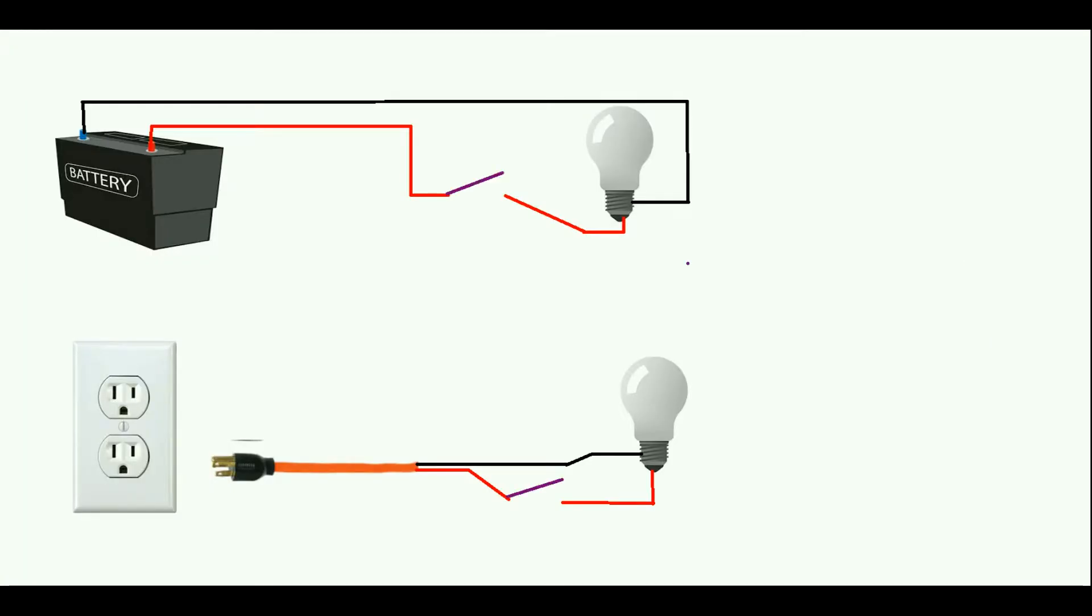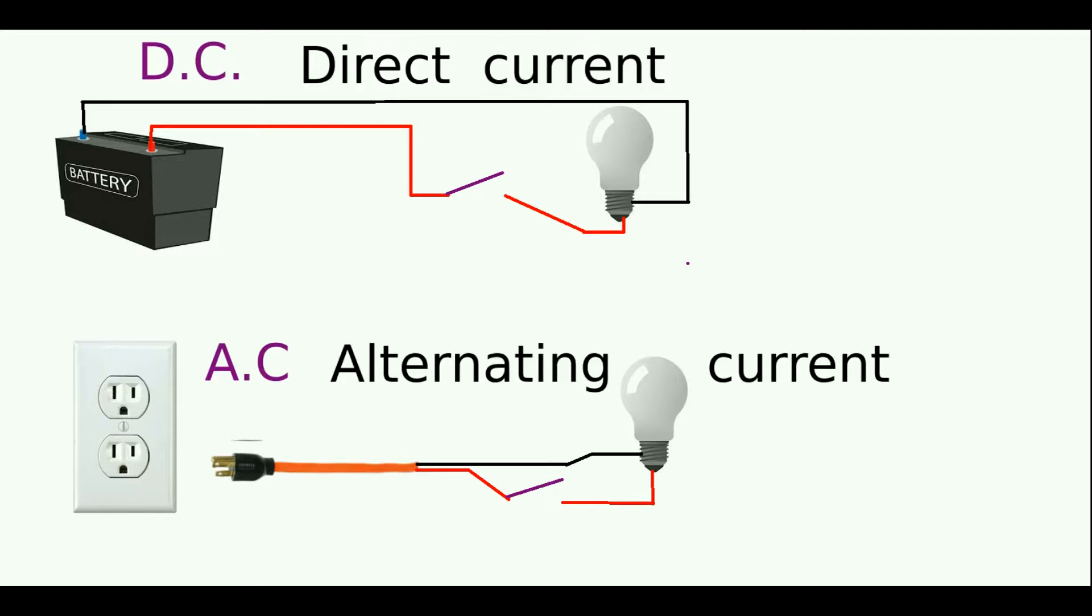Now I will talk about DC and AC circuits. DC stands for direct current and AC for alternating current. The battery on top is my DC source and the wall outlet will be my AC source.